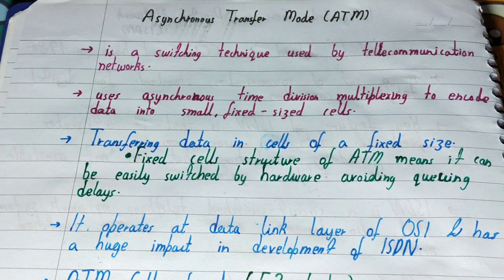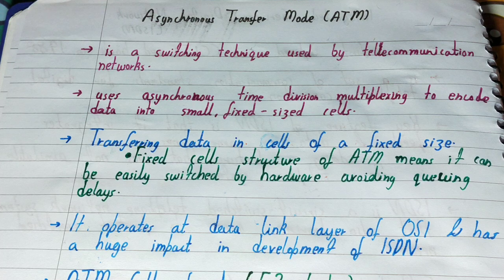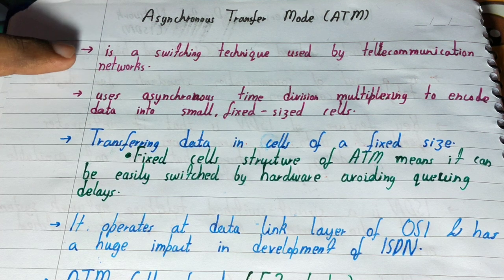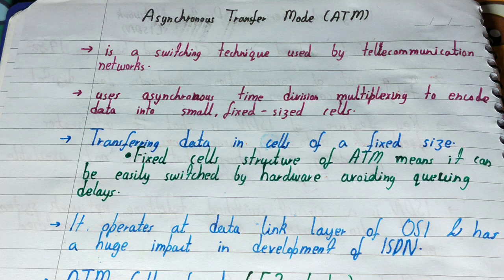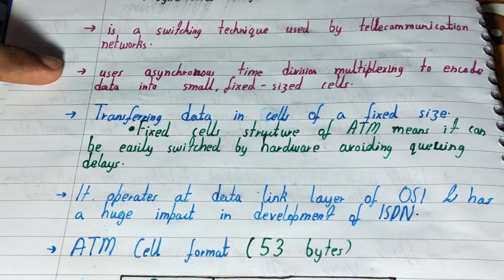ATM is a switching technique used by telecommunication networks. A switching technique is basically a way of data transmission — it defines how data will be transferred from one device to another. Telecommunication networks early on were only for voice, but over the last decade they've expanded to transfer audio, pictures, video, and internet data. Any kind of information can be transferred through Asynchronous Transfer Mode.